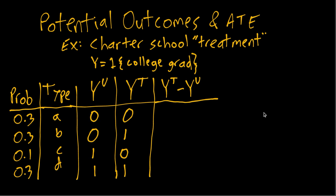For type A, they don't graduate regardless of school, so the treatment effect is zero. Similarly, type D graduates regardless, so also zero effect. For type B, yt is 1 and yu is 0, so 1 minus 0 equals 1 — a positive treatment effect, meaning the charter school leads to graduation. For type C, yt minus yu is actually negative one, so they have a worse outcome in the treated universe.